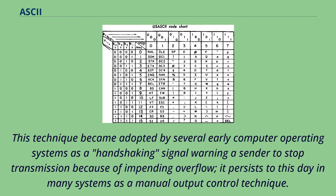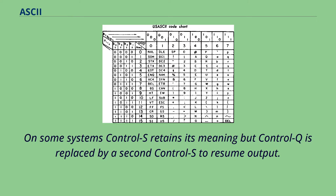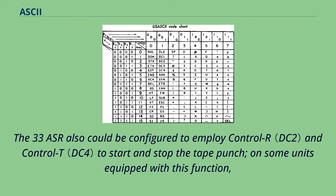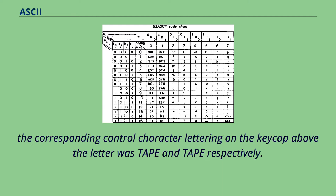This technique became adopted by several early computer operating systems as a handshaking signal warning a sender to stop transmission because of impending overflow. It persists to this day in many systems as a manual output control technique. On some systems Control-S retains its meaning but Control-Q is replaced by a second Control-S to resume output. The 33 ASR also could be configured to employ Control-R and Control-T to start and stop the tape punch on some units equipped with this function.